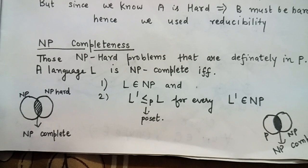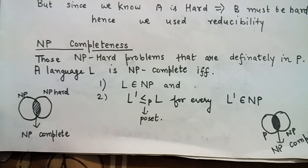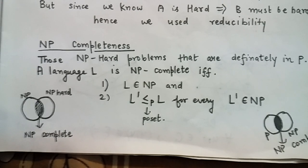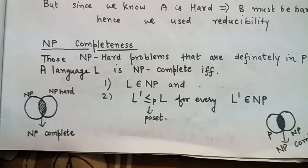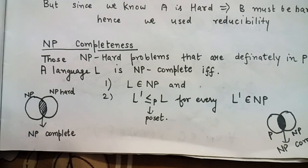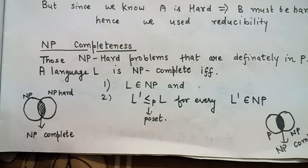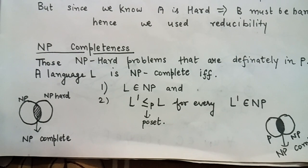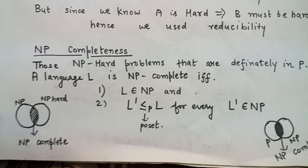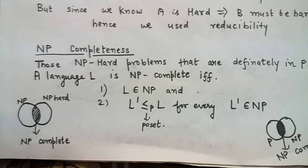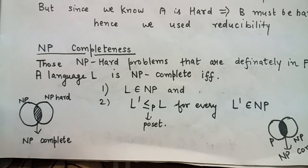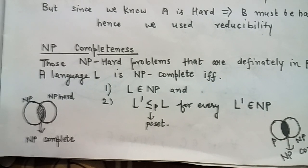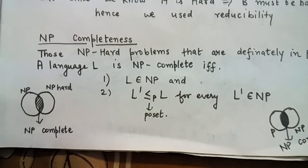Those NP-hard problems that are definitely in NP are known as NP-complete problems. NP-complete problems are also the intersection of NP and NP-hard. So, a language L is NP-complete if and only if L is in NP, and every language L' that is polynomial-time reducible to L, for every L' that belongs to NP.